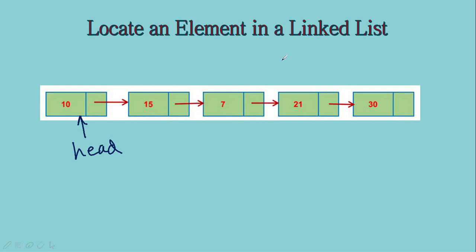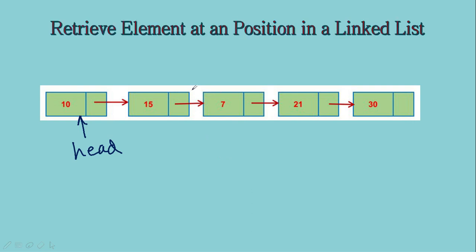Next, locate an element in a linked list. What we were doing here: we check whether an element is present or not — for example, whether 21 is present. Basically this is linear search. I have to start from the first node and traverse till I meet the element I am searching for. So the complexity is going to be big O of N.